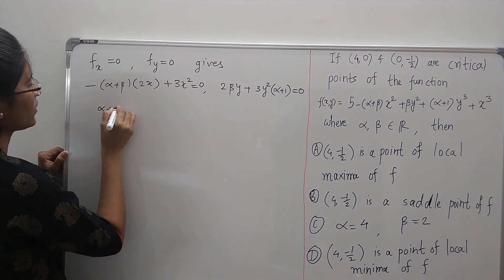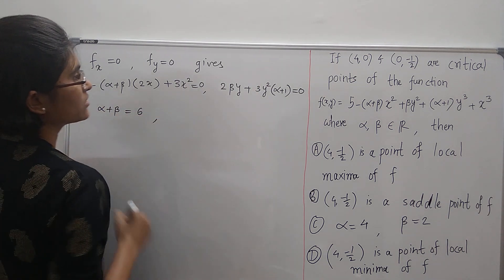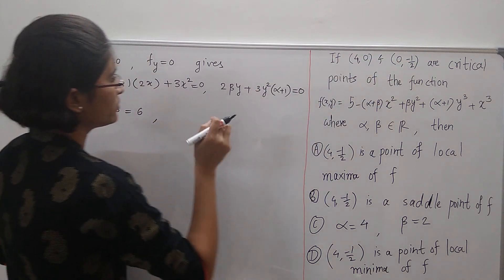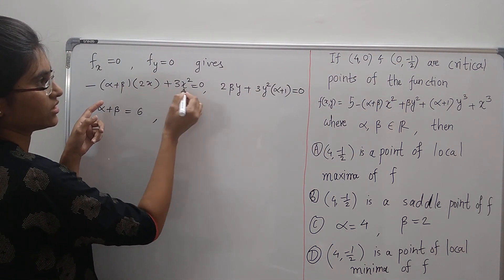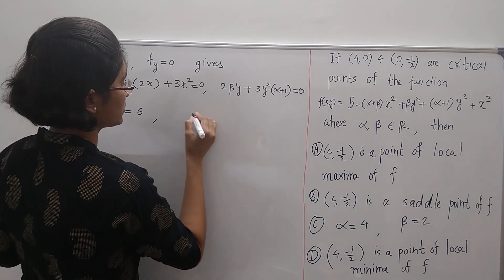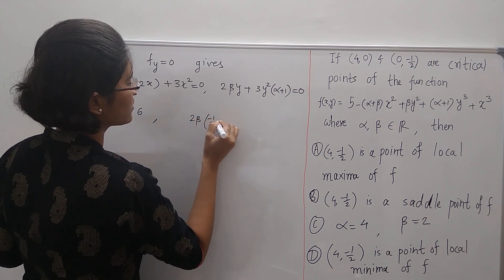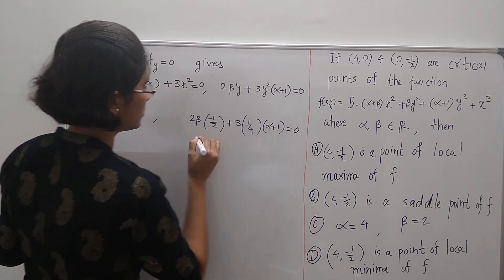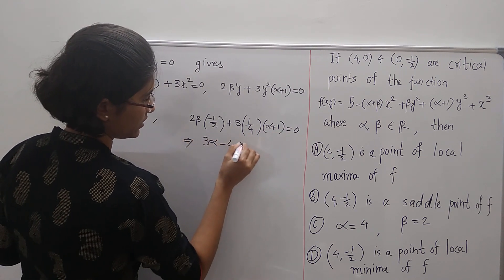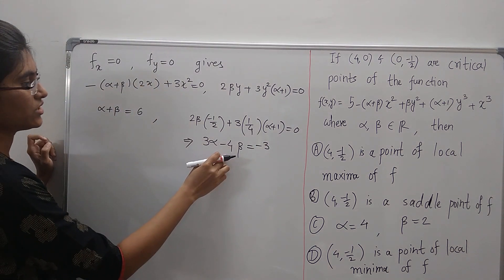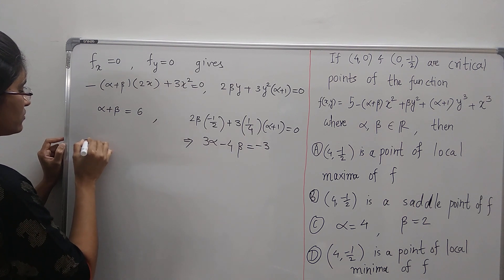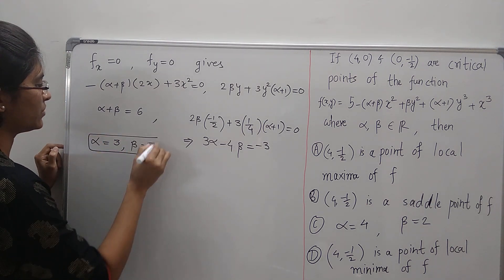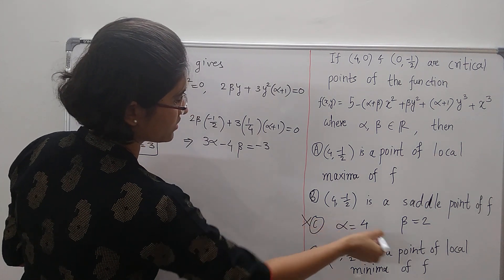Substituting (4, 0) gives α + β = 6. Now substituting (0, -1/2) into the equation for f_y: 2β(-1/2) + 3(1/4)(α + 1) = 0, which gives 3α - 4β = -3. Solving these two equations in two variables α and β, we get α = 3 and β = 3. So option C — α = 4 and β = 2 — is wrong.